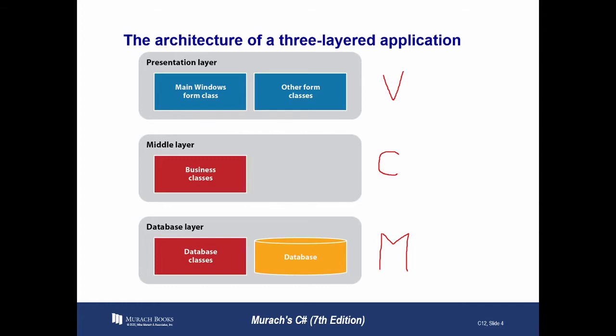I want to stress that these are all classes. They all handle their own classes differently, but they are all classes in C#. Sometimes the middle layer class is called a business class, and any object instantiated from the business class is often referred to as a business object. So if you hear me say business object or business class, it's coming from the middle layer. Ultimately, the most important thing is that this middle layer is an interface between the presentation layer and the database layer — the monkey in the middle.